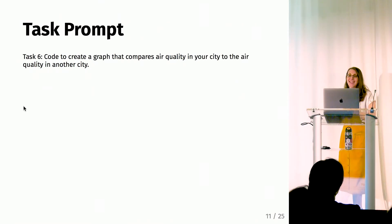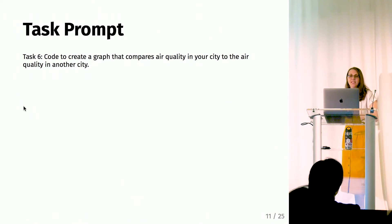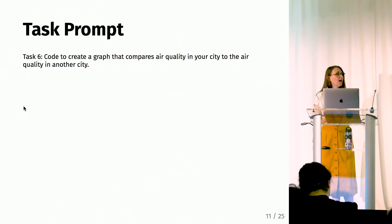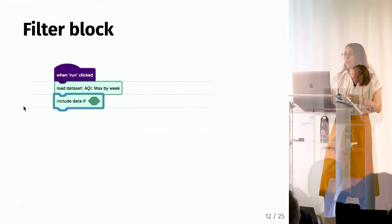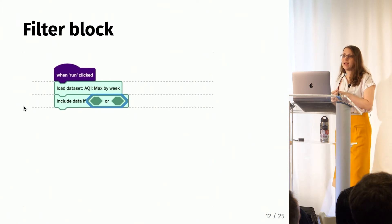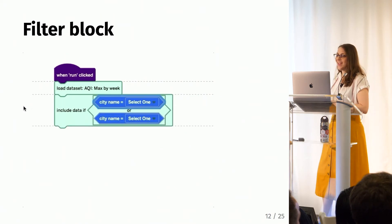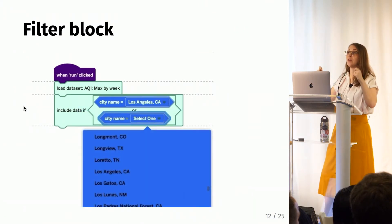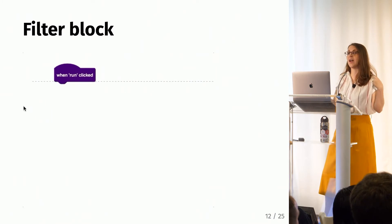Now let's move into completing a task in our UI using these blocks. Here's a prompt where students are asked to choose the city where they live and another city they're interested in, and compare the air quality for the year 2017. This is purposefully a little open-ended — we want students to play around and make different graphs. First, I want to show you the filter block up close and in conjunction with the OR block: here we're filtering to only include Los Angeles and New York in the data. Students are explicitly taught this block through a short activity before they start using it.